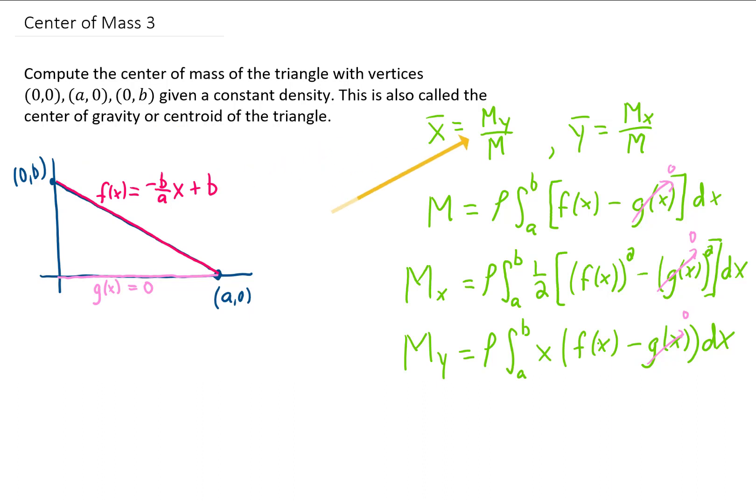One more thing to notice before we start doing these integrals is that this mass and these two moments have this constant density as a factor. And when we're finding the x and y coordinates of our center of mass, we're dividing one of the moments by that mass. So you can see that when we do that division problem, all of these densities are just going to cancel out. So we may as well forget about them now. In other words, we can assume that density is 1, and that won't impact the problem.